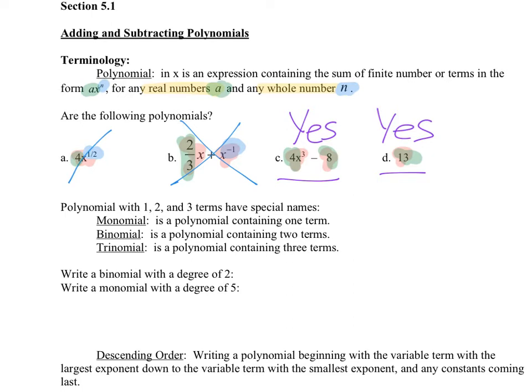We have special names for certain types of polynomials. A monomial has one term, a binomial has two terms, and a trinomial has three terms. Those are our most commonly used terms for different types of polynomials. You can have quadnomials, quintinomials, and many other kinds, but mainly we use monomial, binomial, and trinomial.